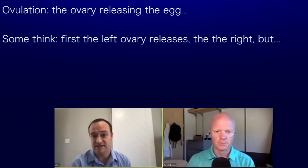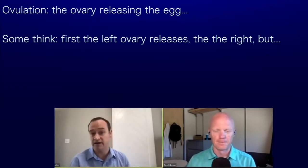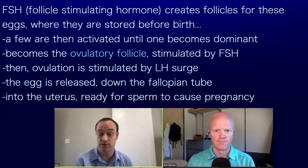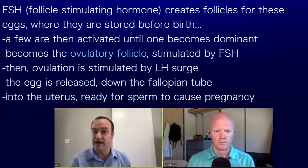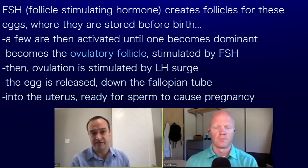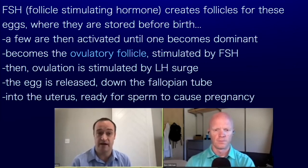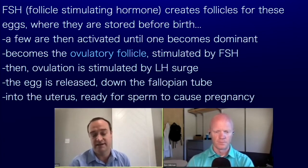FSH, follicle stimulating hormone, creates follicles from eggs that are stored at birth — even before birth, at gestation. A woman will have all the eggs within her body, and a few of them will be activated until one dominant follicle takes over hormonally and becomes the ovulatory follicle. That ovulation, triggered by the LH surge, releases the egg, the fallopian tube can get that egg, bring it into the uterus, sperm can meet with it, and it can implant to cause a pregnancy.